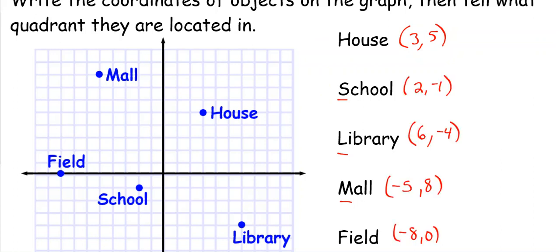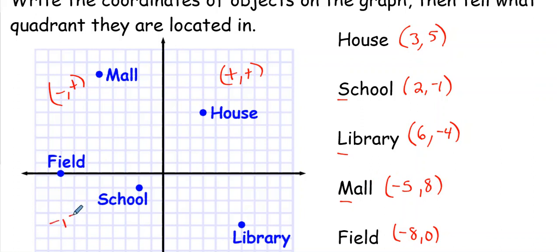Check those answers. Remember, looking at the coordinates again: quadrant one is positive, positive; quadrant two is negative, positive. So if something is in quadrant two it should have a negative number and a positive — and yes, it does. Quadrant three is negative, negative. Quadrant four is positive, negative. So the library should have a positive x and a negative y — and yes, it does.